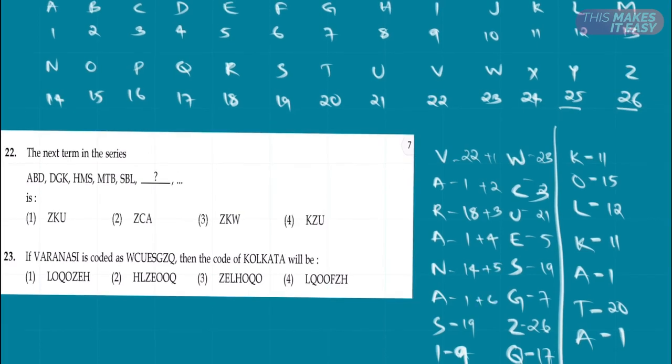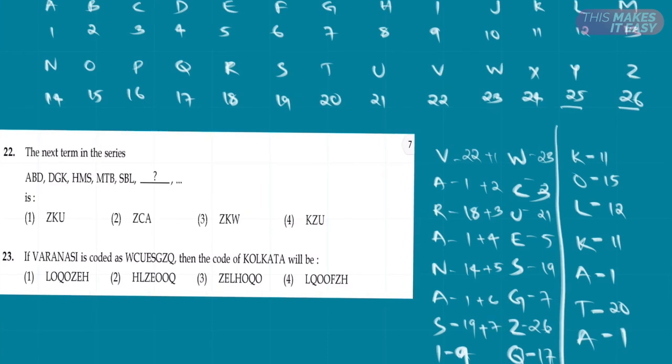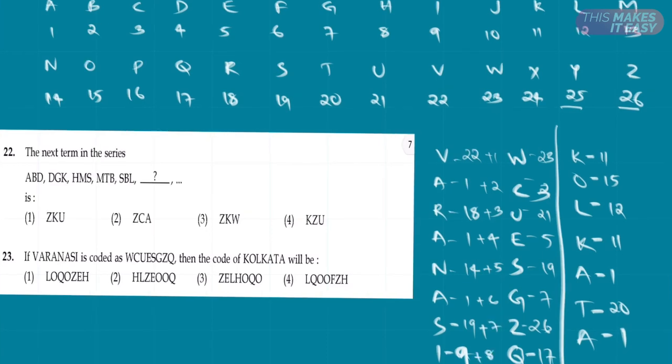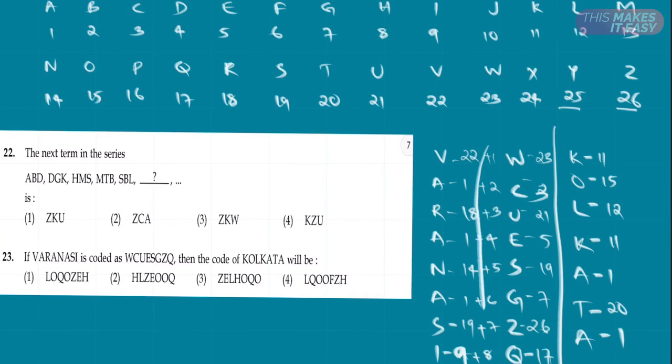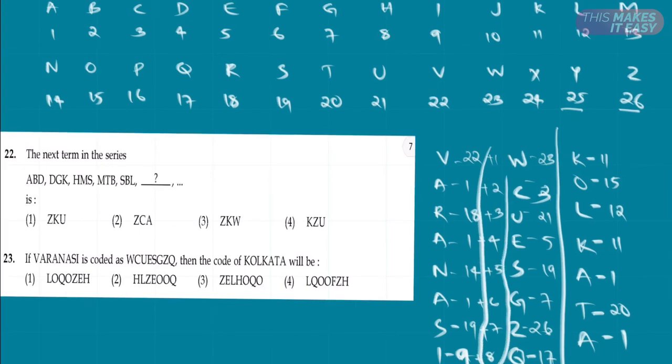19 plus 7 is 26. 9 plus 8 is 17. So basically we are constantly adding 1 to the previous number.